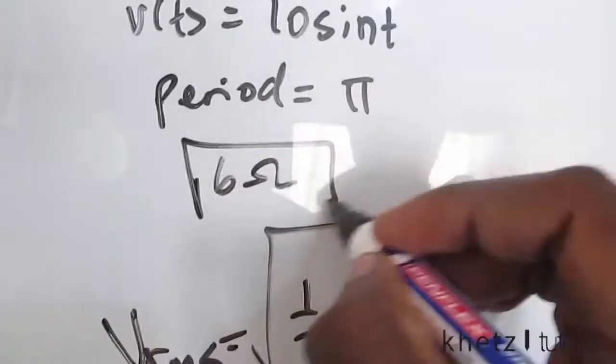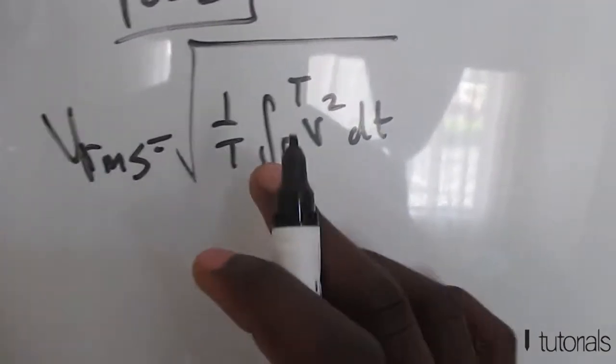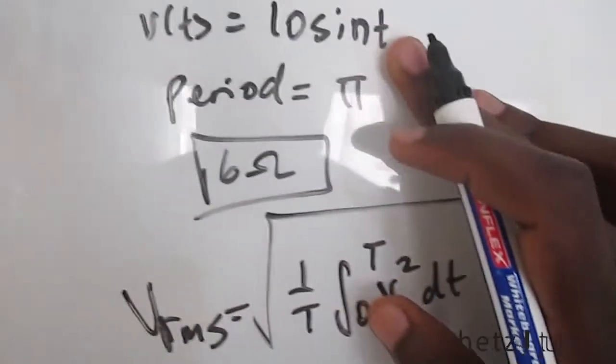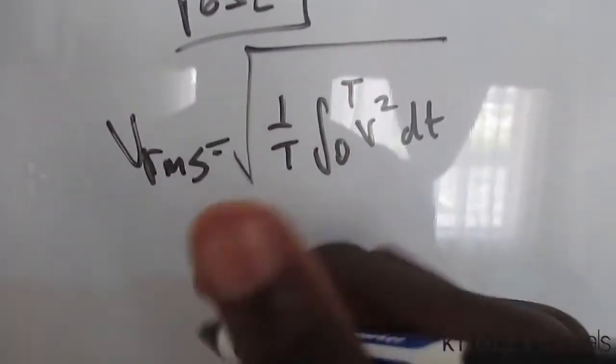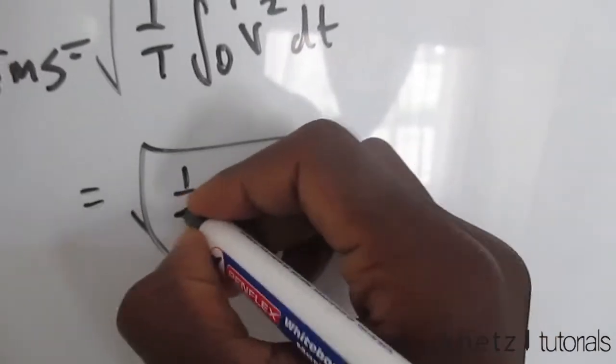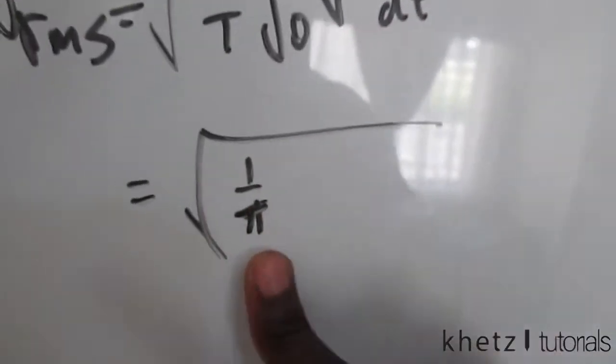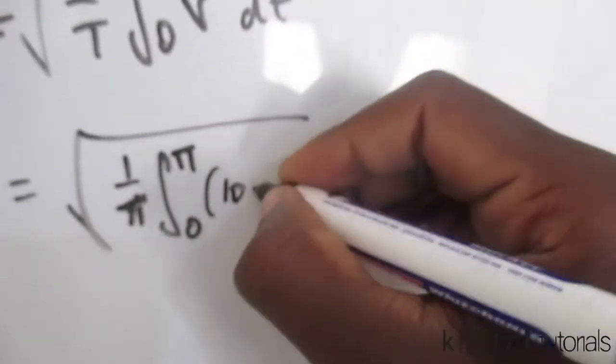Let's substitute now. So 1 over pi, this is the period, substitute the period where we see T, and then we take 10 sine t and we square it.